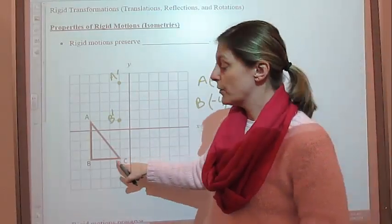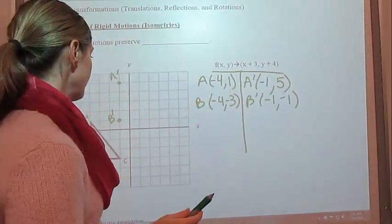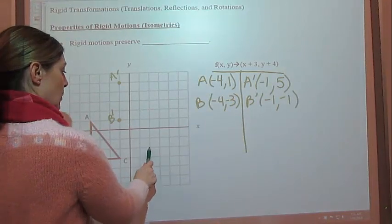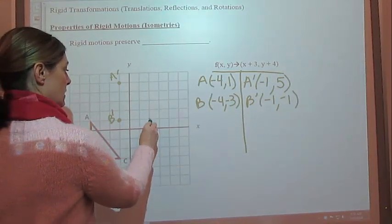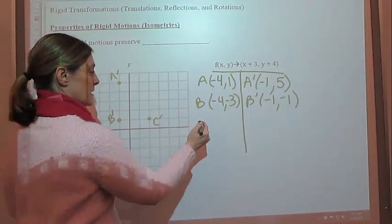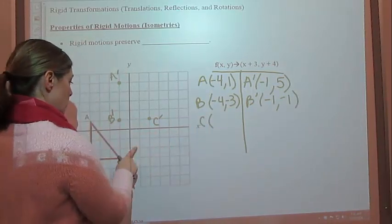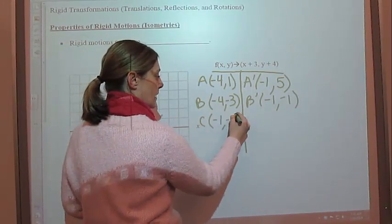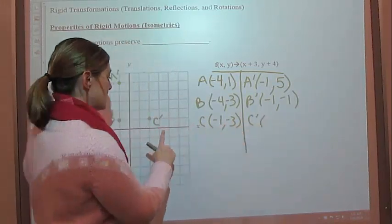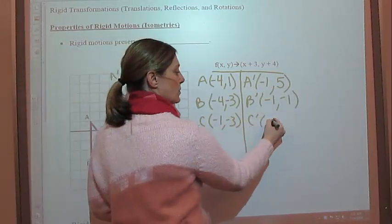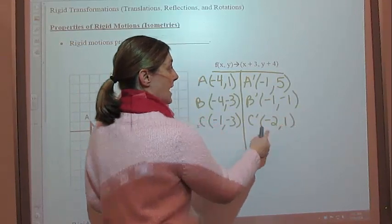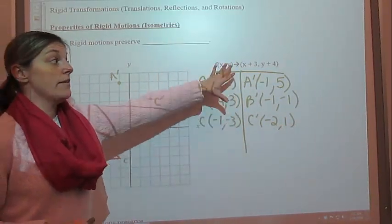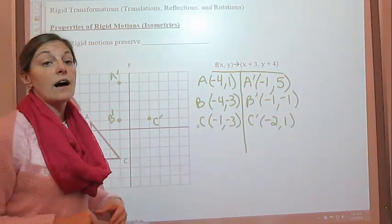And then finally we're going to do C. So we go over 1, 2, 3, and up 1, 2, 3, 4 — and there's C prime. Our original C was at negative 1, negative 3, and now C prime is at negative 2, 1. And again, you can plug in your x and y values to get the output.